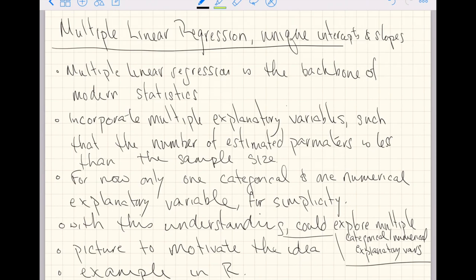Multiple linear regression, because of its generality, is really the tool behind many worlds of statistical models. Many models of statistics rely on the framework developed in the understanding of multiple linear regression. We are figuring out how to incorporate multiple explanatory variables to predict one numerical response variable, such that the number of estimated parameters is less than the sample size. As long as that holds, we can incorporate basically as many numerical and categorical explanatory variables as we want.